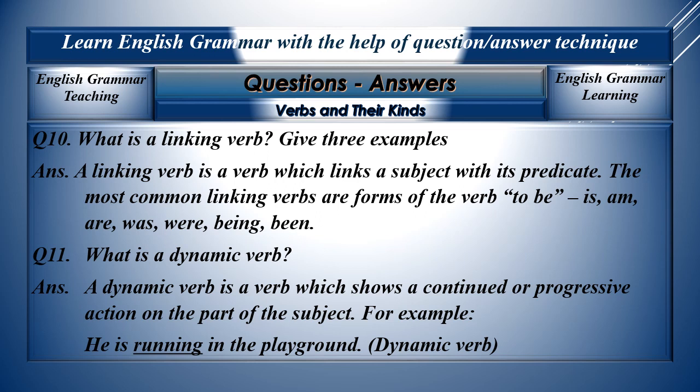Question ten: What is a linking verb? Give three examples. A linking verb is a verb which links a subject with its predicate. The most common linking verbs are forms of the verb 'to be', for example: is, am, are, was, were, being, been. Question eleven: What is a dynamic verb? A dynamic verb is a verb which shows a continued or progressive action on the part of the subject. For example, 'he is running in the playground.' Running is a dynamic verb because there is movement and progression.